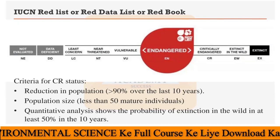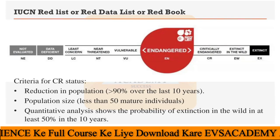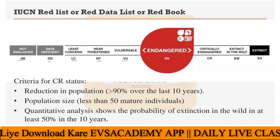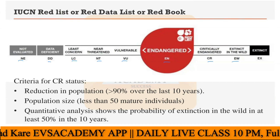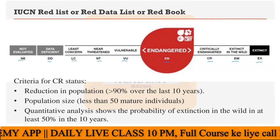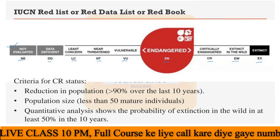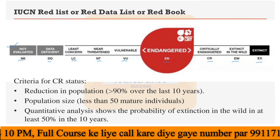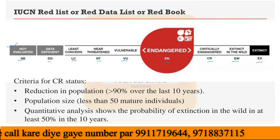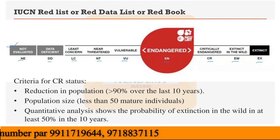Here you can see all nine categories. The first is Not Evaluated — species found in very high abundance in the environment with no need for evaluation. These species are simply not evaluated.